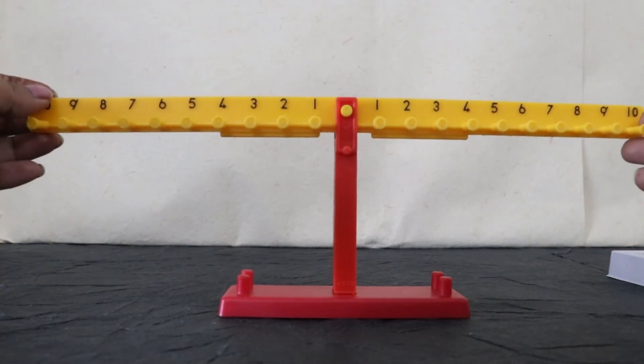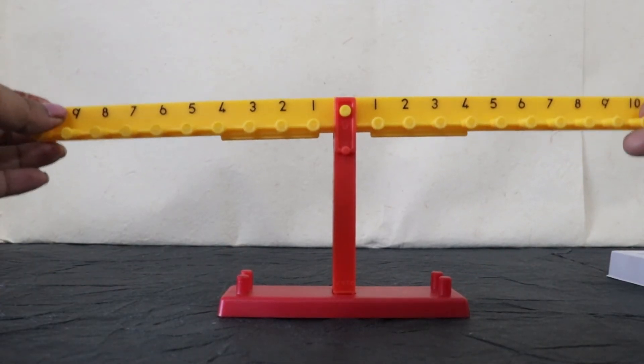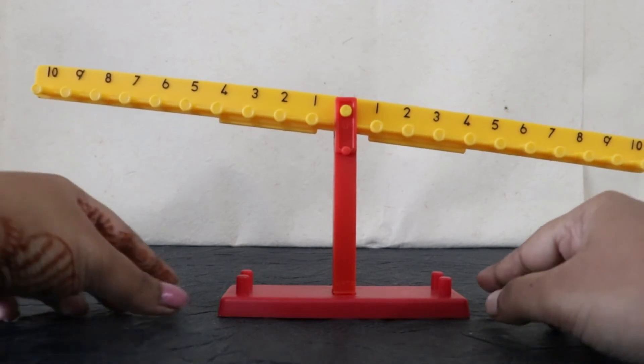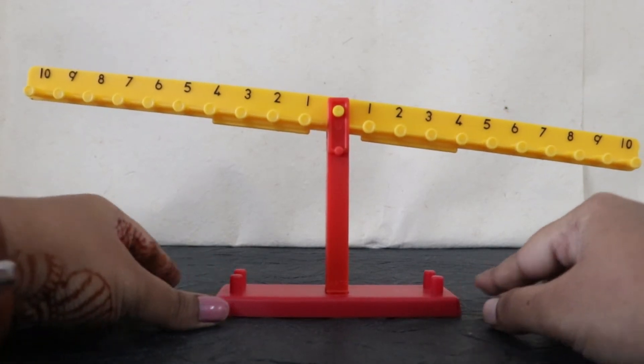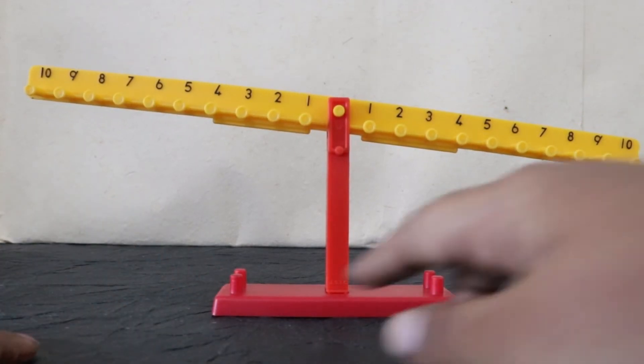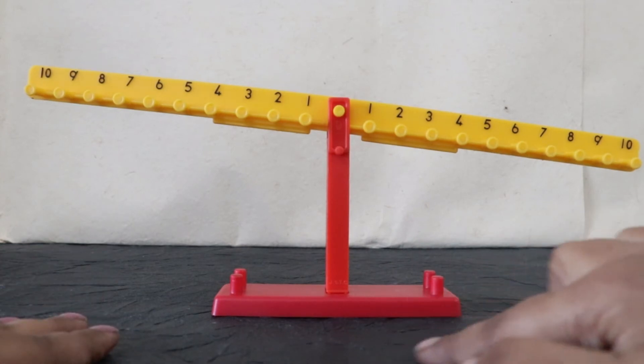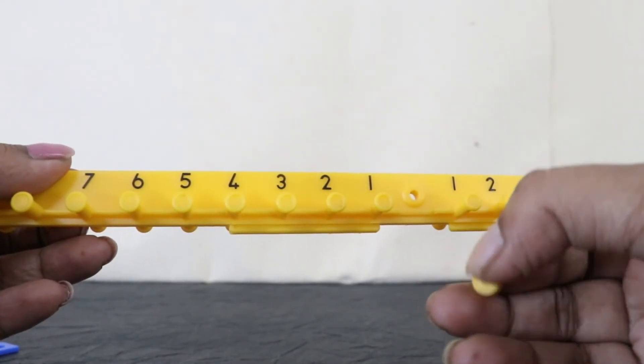So here is the assembly. Make sure that it is perfectly balanced horizontally. While exploring the number balance kit we need to keep it on a plain surface. Otherwise we can make use of these small balances if it is not balanced perfectly.